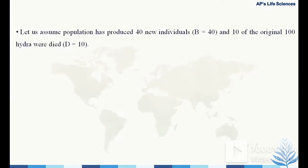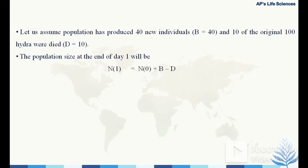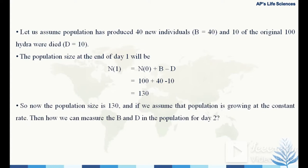Assume the population produced 40 new individuals, so b equals 40, and 10 of the original 100 hydra died, so d equals 10. The population size at the end of one day is then N1 = N0 + b − d = 100 + 40 − 10 = 130.